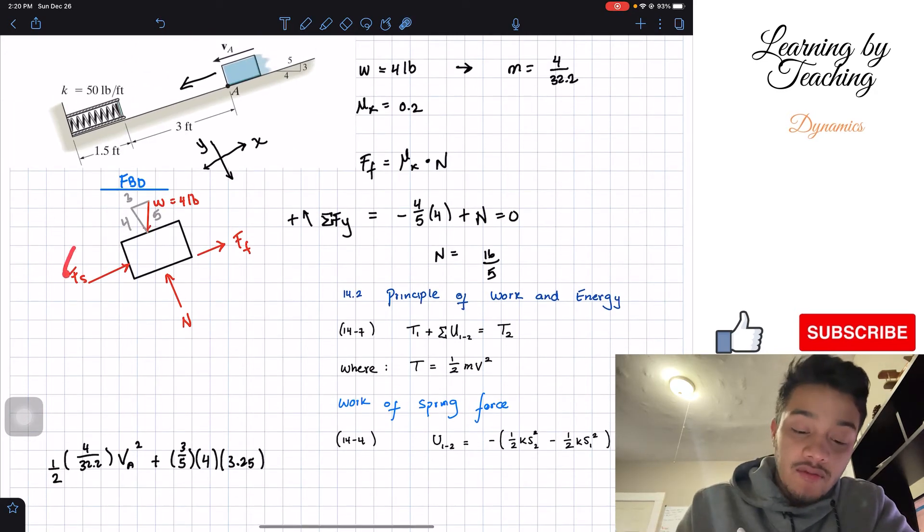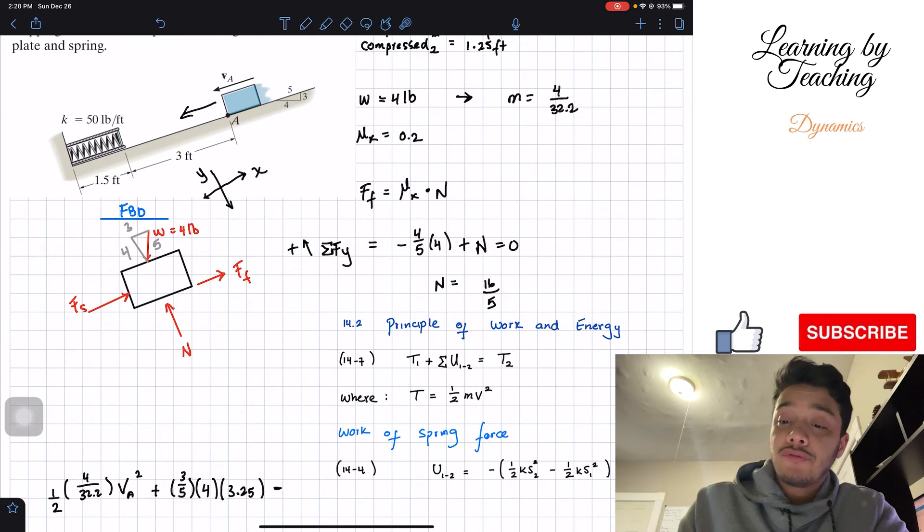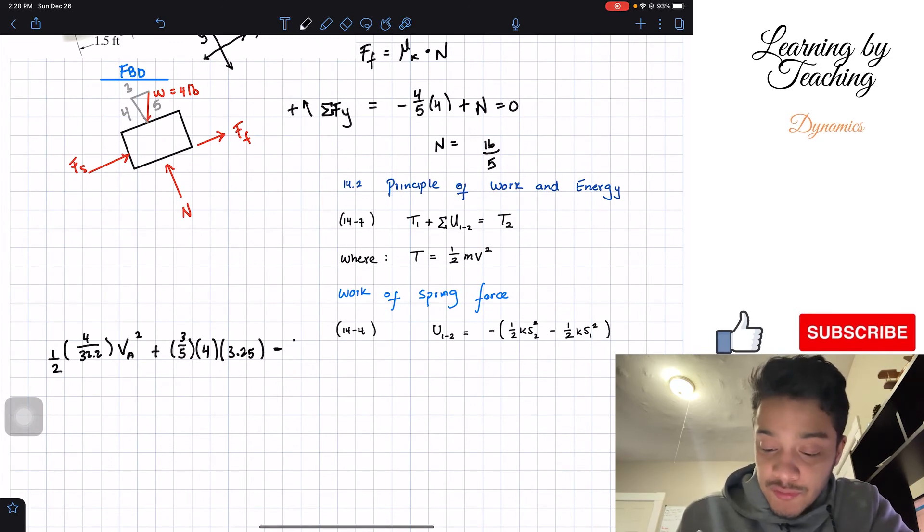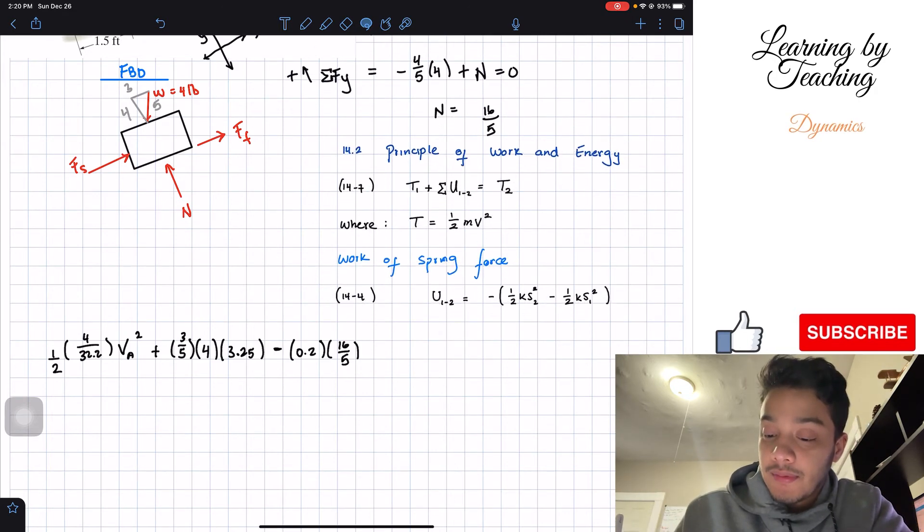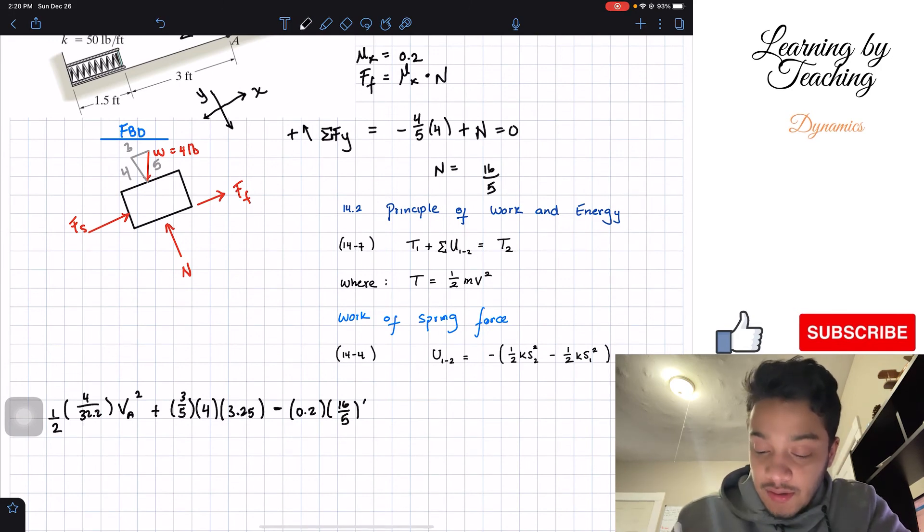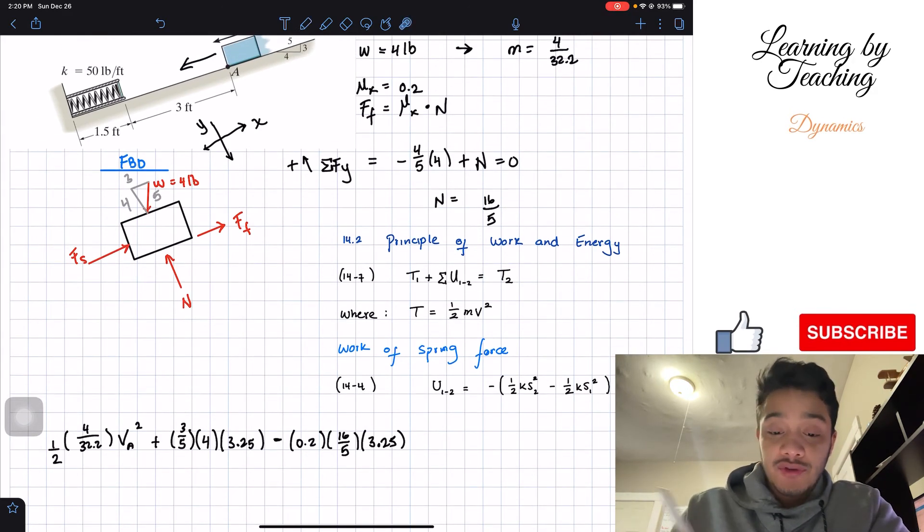What other forces do we have in the x direction? Well, we got the force of the spring and we have the frictional force. So let's start with the frictional force. And in this case it's going to be negative. And the reason for that is that it's going in the opposite direction of my velocity. So we got negative, and the frictional force, which is mu_k, 0.2, times N, which is 16 over 5. Now we need to multiply by the distance. So all the distance that it moved in that direction is the same.